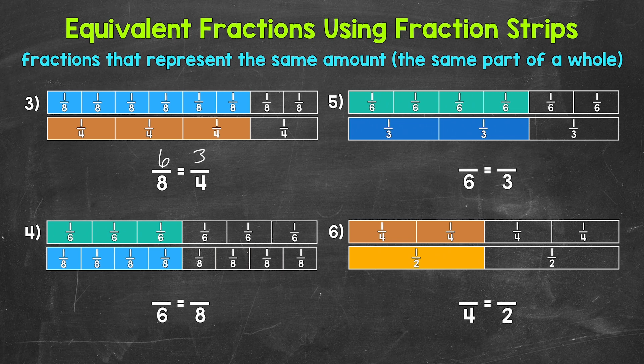Moving on to number four, we have a top fraction strip divided into six equal parts, and three of those parts are shaded, so that fraction strip is showing three-sixths. That's going to be equivalent to how many eighths? The fraction strip below has been divided into eight equal parts and four are shaded. So three-sixths is equivalent to four-eighths.